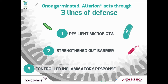The next step is to see what the effects would be through the metabolites, once the spores have germinated, across the three lines of defense — starting from the microbiota, then moving through the gut barrier, and also the control of inflammation. So let me move on to the first topic: the microbiota.